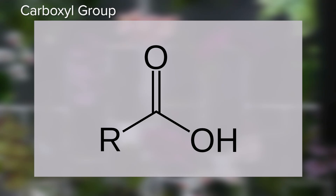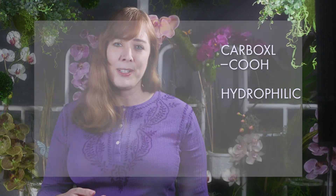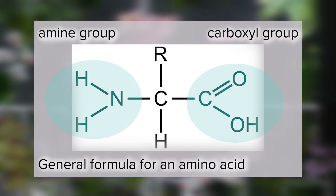The carboxyl group is COOH — a carbon double bonded to an oxygen and also attached to a hydroxyl group. These groups confer acidic behavior to molecules because they tend to donate their H+, becoming COO-. You'll see these on one side of amino acids, for instance. And on the other side of an amino acid, you see the amine group, NH2.